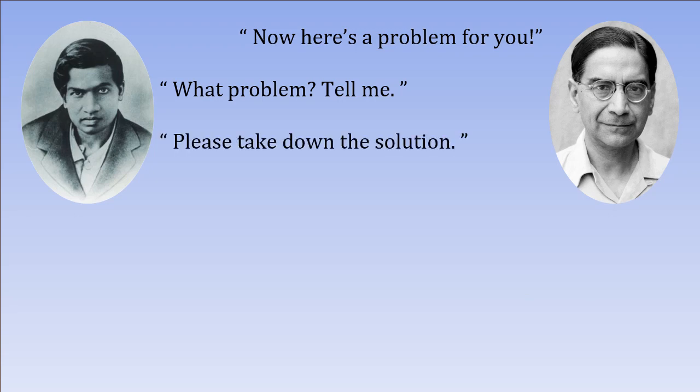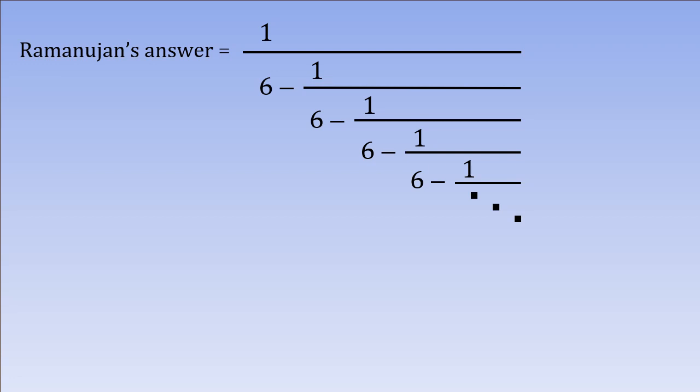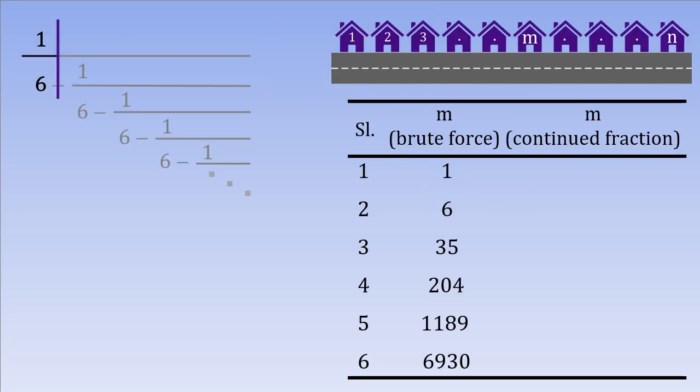Please take down the solution, he said, still preparing the vegetables, and went on to dictate an infinite continued fraction. Ramanujan said, different solutions for M can be found by truncating this continued fraction at different locations. Let us figure out what he meant by that.